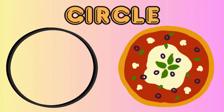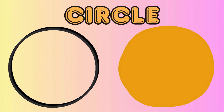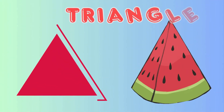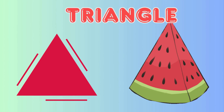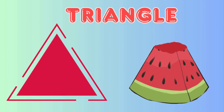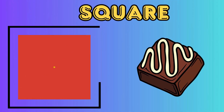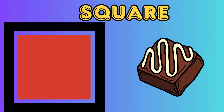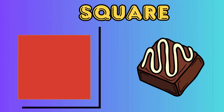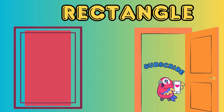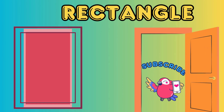A circle, like a pizza. A triangle, like a slice of watermelon. A square, like a piece of chocolate. A rectangle, like a door.